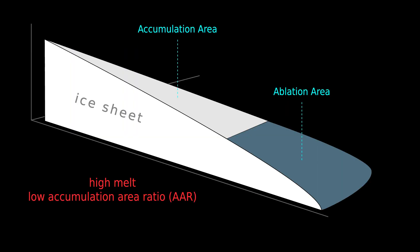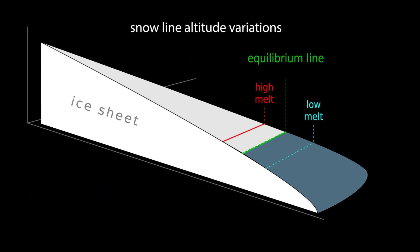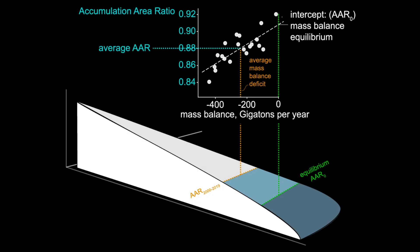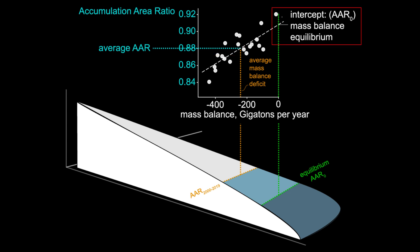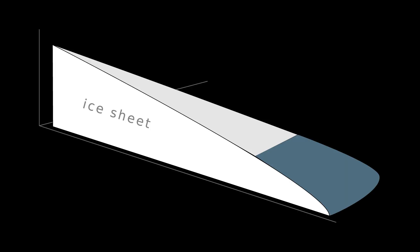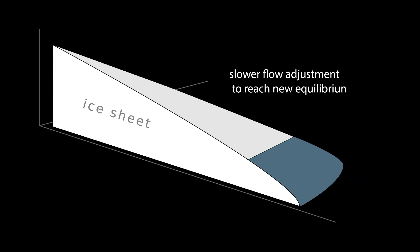Now for the current shape of the ice sheet to be in equilibrium with climate, the accumulation area ratio should equal the equilibrium accumulation area ratio. But as you can see, for Greenland, like nearly all ice masses on Earth, the observed accumulation area ratio is less than the equilibrium. This tells us the ice sheet has to shrink to reach a new equilibrium.